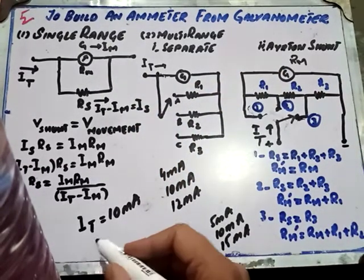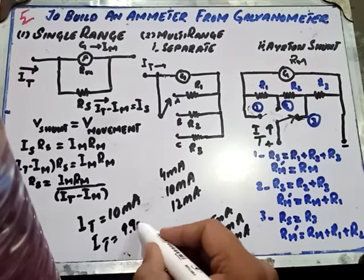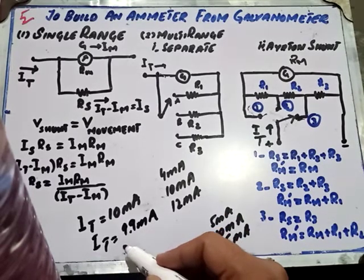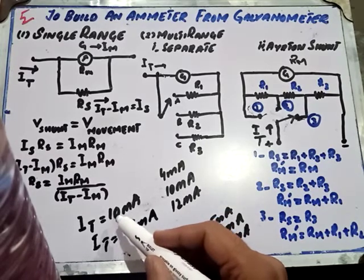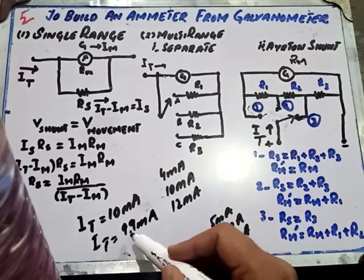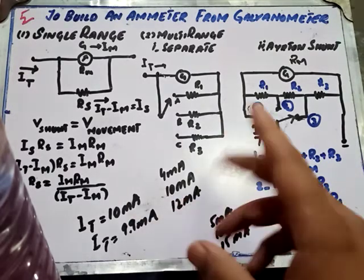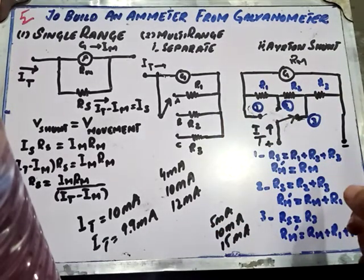If the simulation gives 9.9 mA instead of the required 10 mA, you perform error analysis based on these two values. Similar error analysis applies to the separate shunt and Ayrton shunt designs as well. Thank you very much.